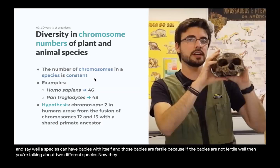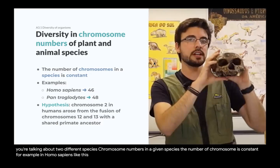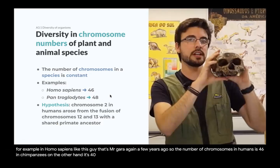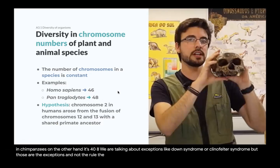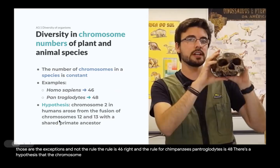Now, the diversity of chromosome numbers. In a given species, the number of chromosomes is constant. In Homo sapiens, that's 46; in chimpanzees it's 48. Exceptions like Down syndrome or Klinefelter syndrome exist, but those are the rule for their respective species. There is a hypothesis that human chromosome 2 arose from the fusion of chromosomes 12 and 13 from a shared primate ancestor. Can we test this hypothesis?